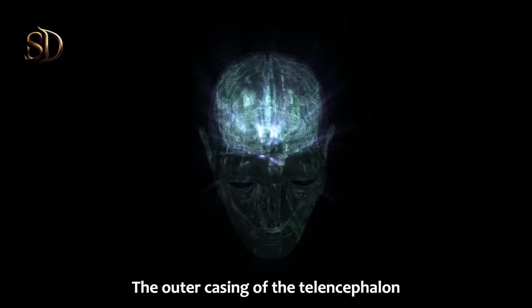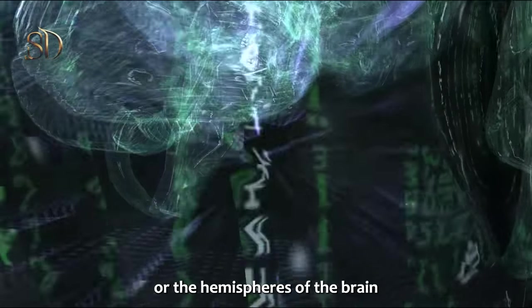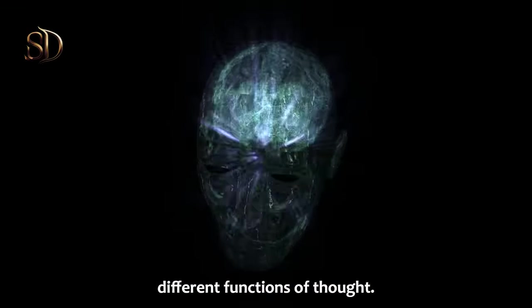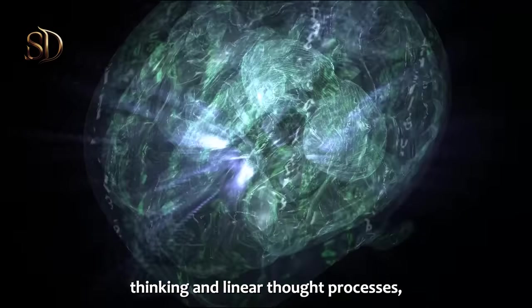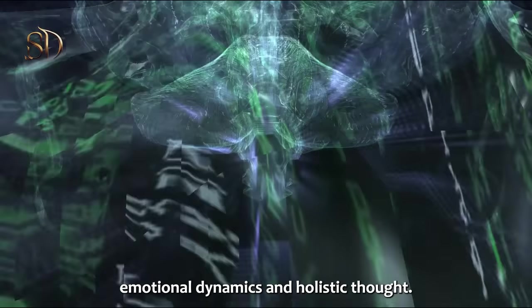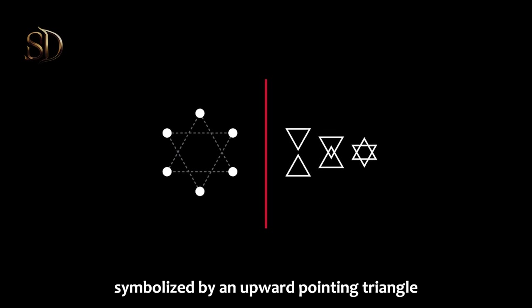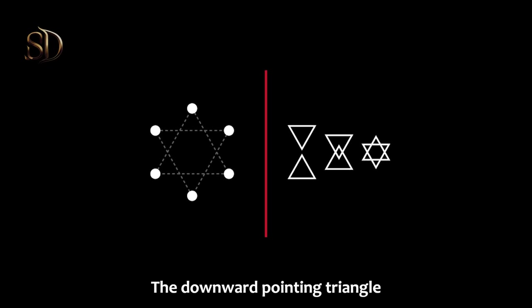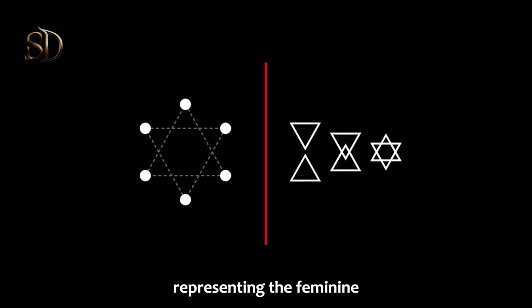The outer casing of the telencephalon is the neocortex, which is the higher brain. The telencephalon or the hemispheres of the brain are bilaterally symmetrical and generally control different functions of thought. The left hemisphere governs logic, analytical and mathematical thinking, and linear thought processes, while the right hemisphere facilitates creativity, emotional dynamics, and holistic thought. When the left side of the brain becomes chronically dominant, symbolized by an upward-pointing triangle or blade, it represents the masculine part of the brain. The downward-pointing triangle, known as the chalice or cup, is another ancient symbol representing the feminine part of the brain.